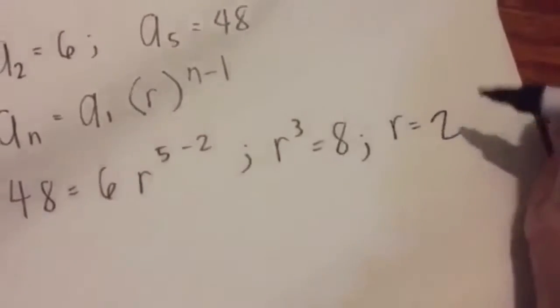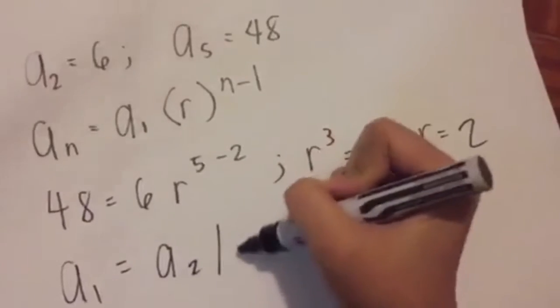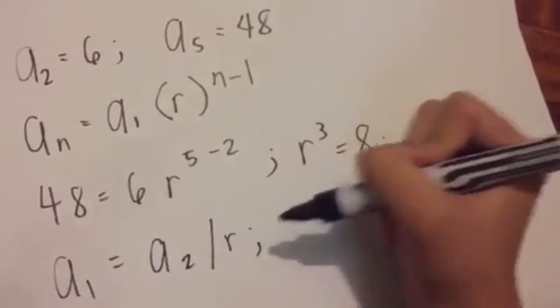Forty-eight equals 6 times r raised to 5 minus 2. You've already plugged in your given values to your formula. Now r cubed equals 8.